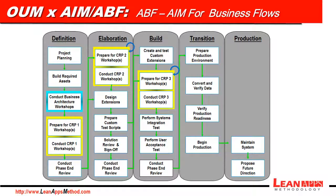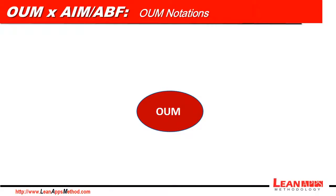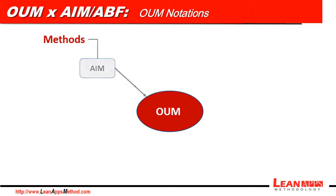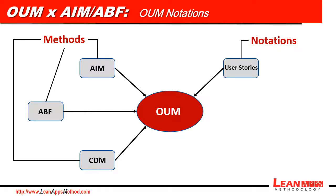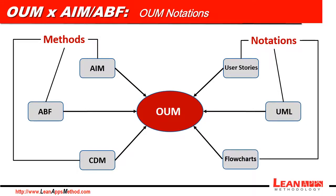OUM uses methods like AIM, ABF, and some templates which came from CDM, which is basically a system development method. It also uses notations which came from Scrum, like user stories, UML, and flow charts.